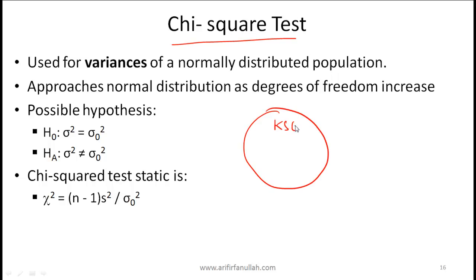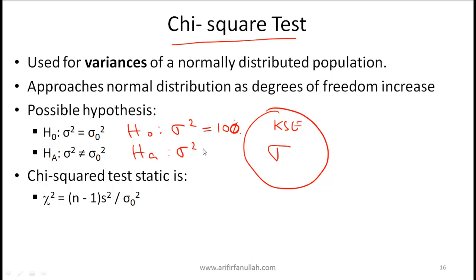Returning to the Karachi Stock Exchange, suppose we now have a hypothesis about variance rather than the mean — for example, that the variance of Karachi stock returns is not equal to 100 (i.e., standard deviation not equal to 10%). That sets up a two-tailed test: H0: sigma-squared equals 100 versus H1: sigma-squared not equal to 100.